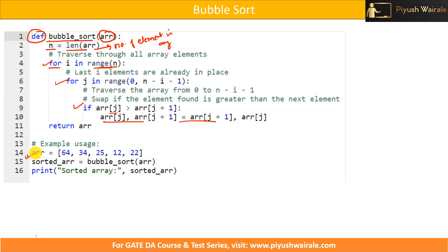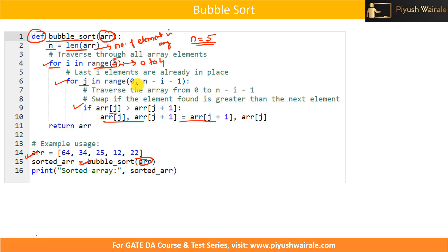Now let's discuss an example. We have an array with specific elements and we call the function with this array as input. The value of n is the number of elements: 1, 2, 3, 4, 5 — so n equals 5. For i in range n, range of 5 means it iterates from 0 to 4.